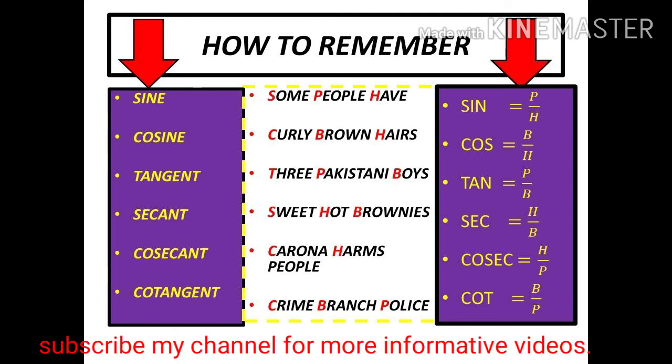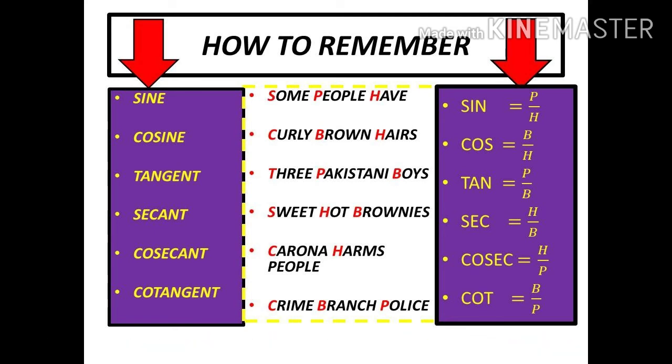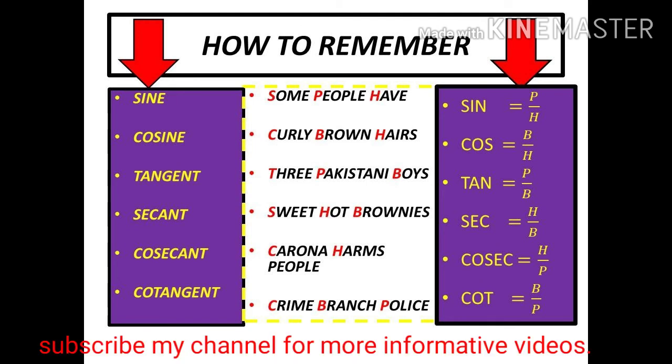Now it's time to learn sec. Sec is equal to "Sweet Hot Brownies". S is for sec, H is for hypotenuse, and B is for base. So sec equals hypotenuse upon base.